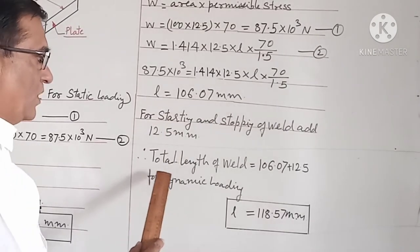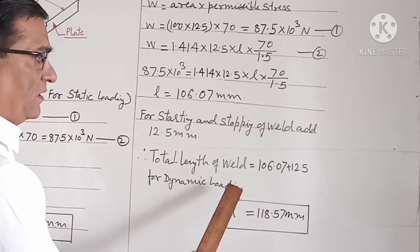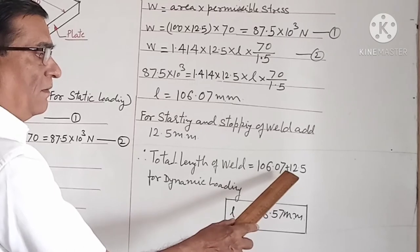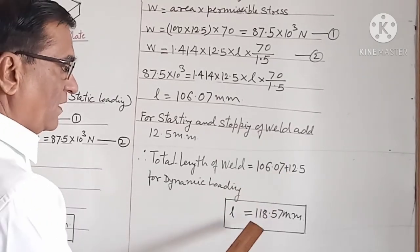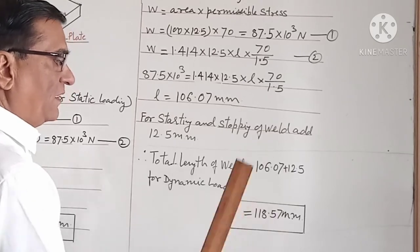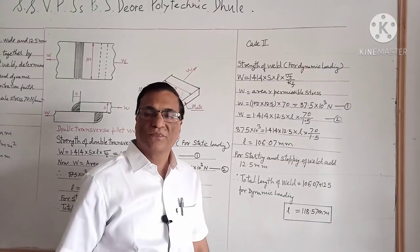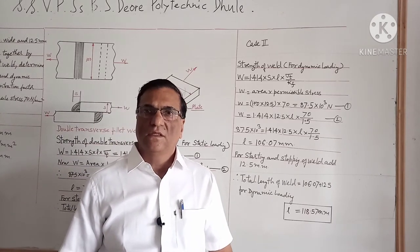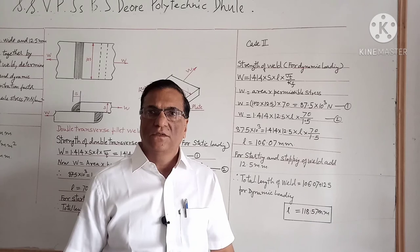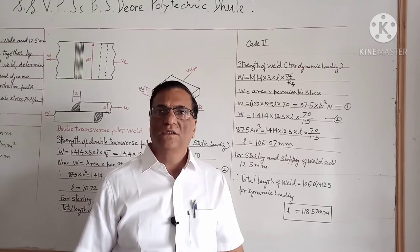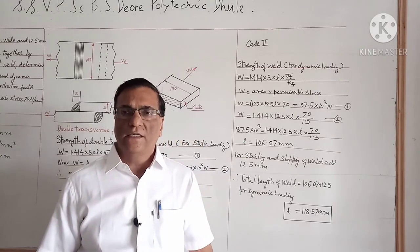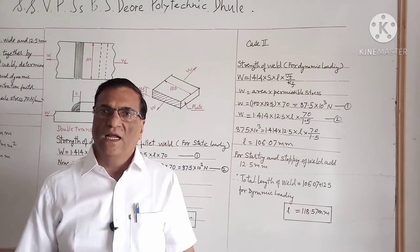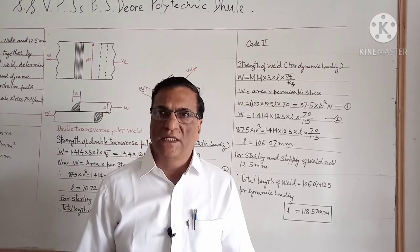The total length of weld for dynamic loading is the summation of 106.07 plus 12.5, that comes out to be 118.57 mm. This concludes how to determine the strength of the weld for double transverse fillet weld for static loading and dynamic loading. Thank you very much.